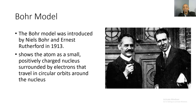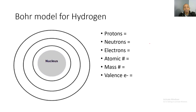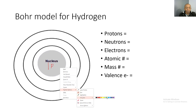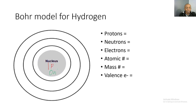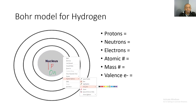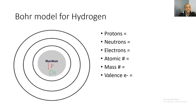The electrons are located in the electron cloud or electron ring around the nucleus. For example, let's look at the Bohr model for hydrogen. Hydrogen has one proton, shown in red, and zero neutrons, shown in green. Hydrogen only has one electron — we know this because we have one proton and one electron.